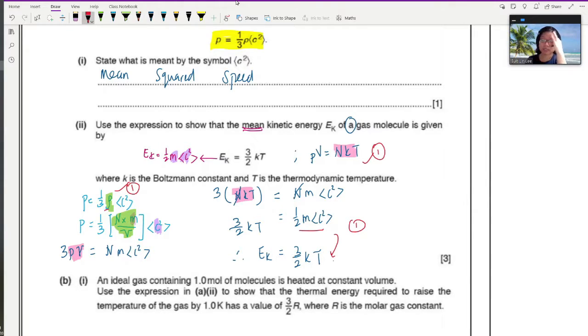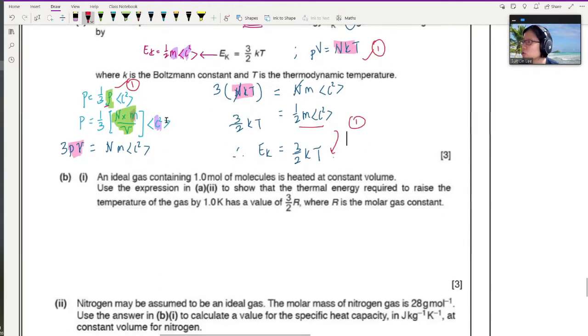So where's the marks? When you state this equation pv equals N k T, this is one mark. Then when you convert or replace density by this one, this whole thing here is one mark. And then algebra leading to half m c square convincingly, and then subsequently, this one is one mark.